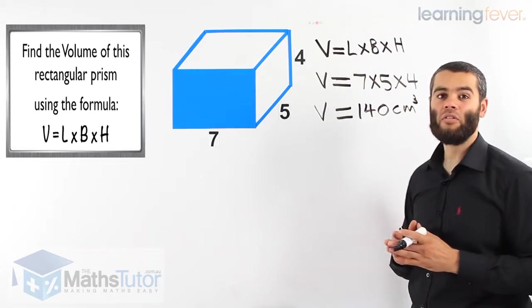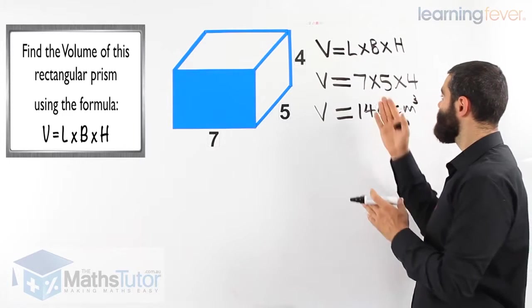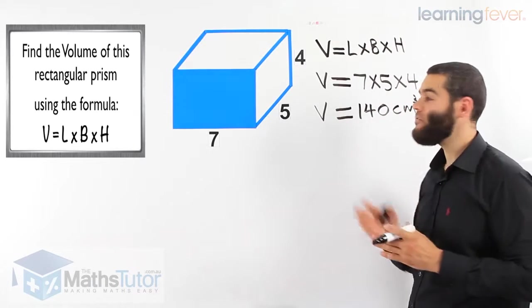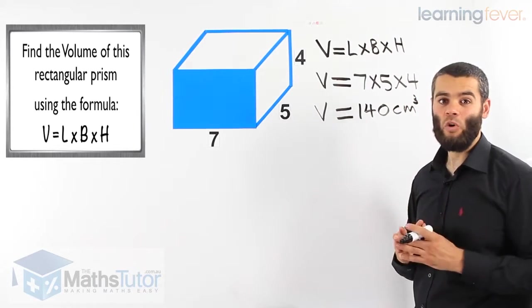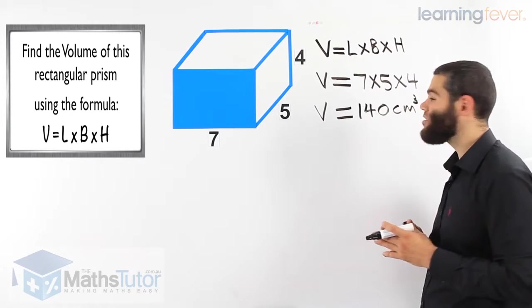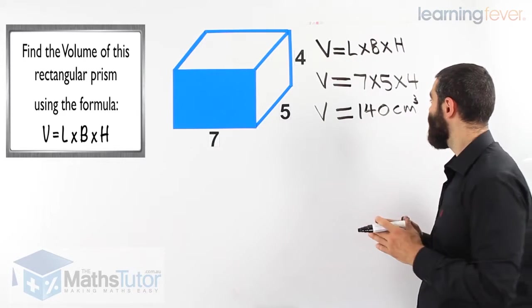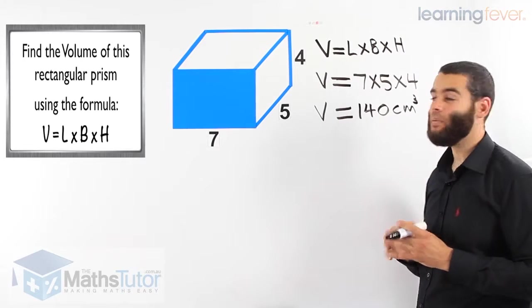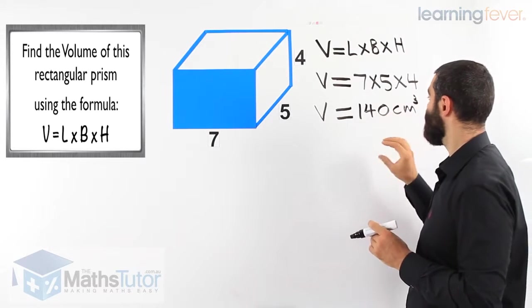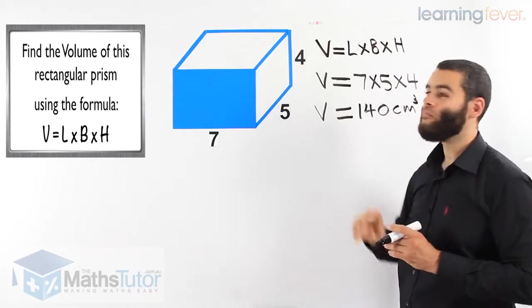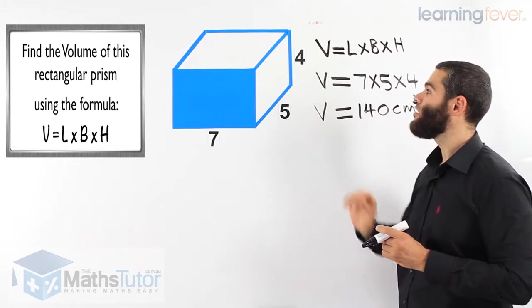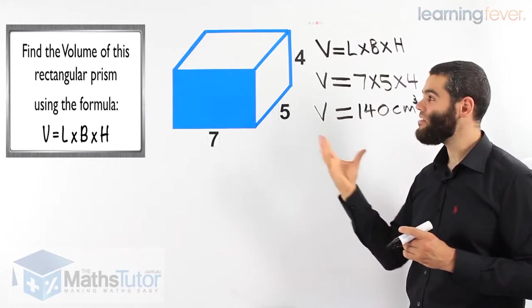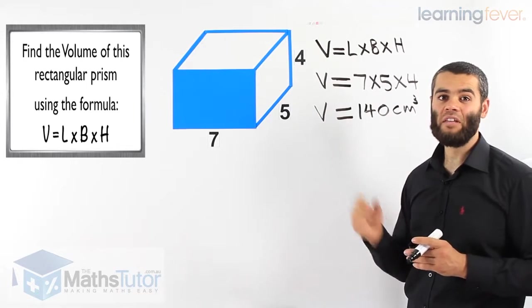Well, seven is our length, five is our breadth, and four is our height. Seven times five times four is a hundred and forty cubic centimeters. There are a hundred and forty cubic centimeters we can fit inside this rectangular prism. This is the basic volume of a rectangular prism.